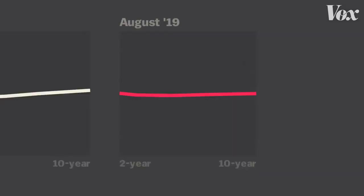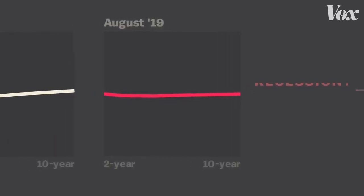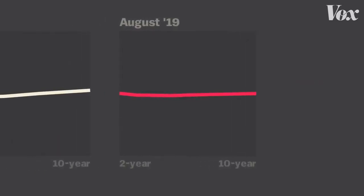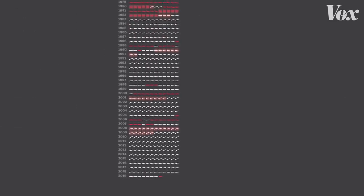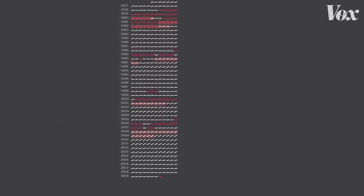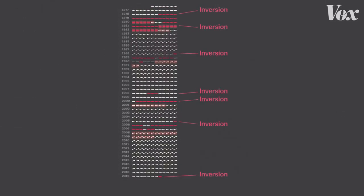And that's what's happening now. So, is a recession coming? Not necessarily. But when we redesign the chart so we can see all the years on a single screen, it's pretty safe to say — when the yield curve inverts, it's not a good sign.